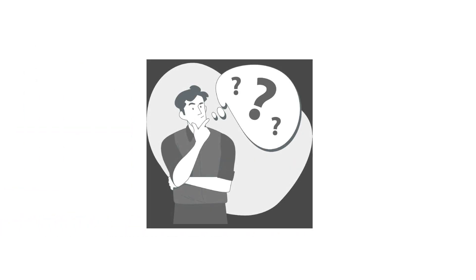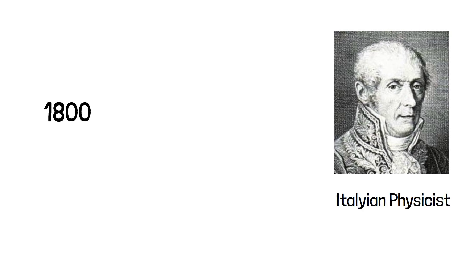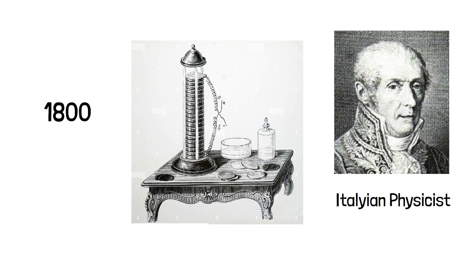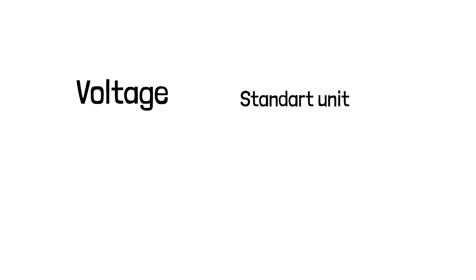It all started around the 1800s. In 1800, Alessandro Volta, an Italian physicist, invented the electrochemical battery, which was able to produce continuous current. This invention was very important and was the first breakthrough for any electricity-related field. In fact, after his name we got 'voltage,' the standard unit used in science and engineering.